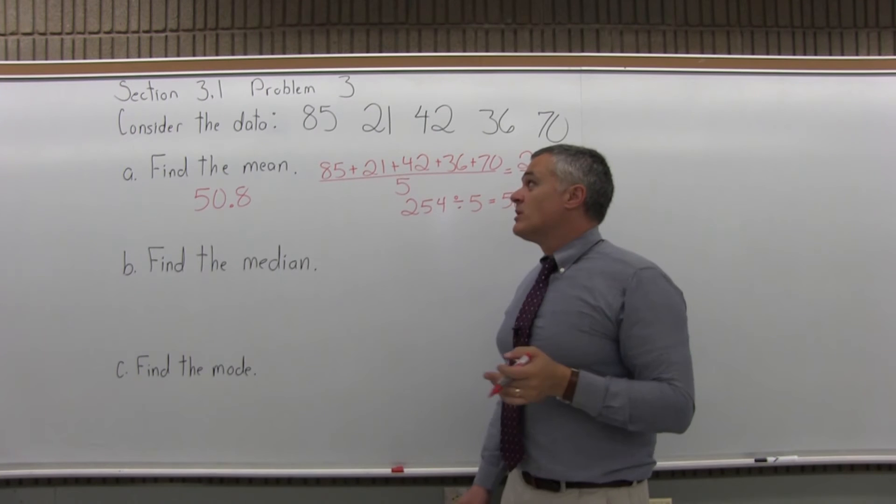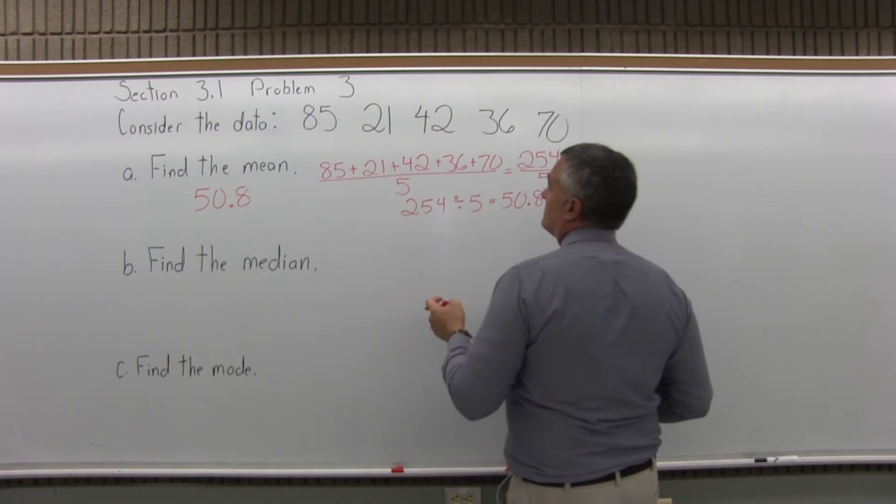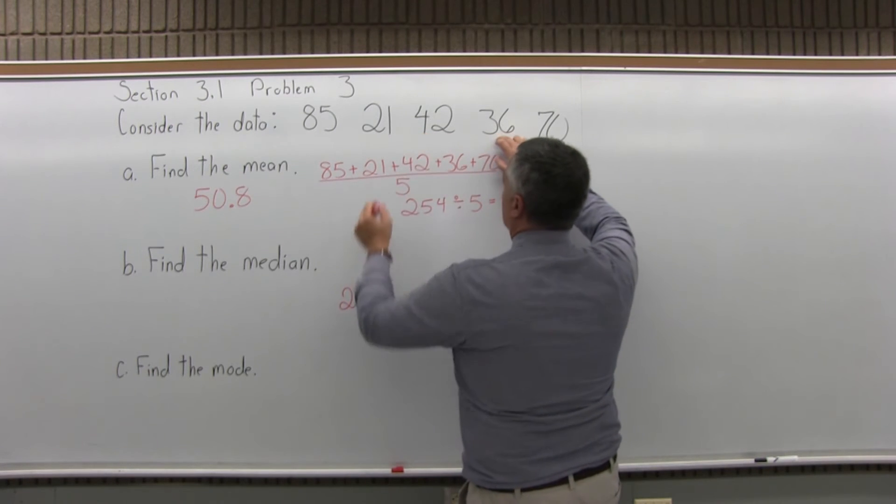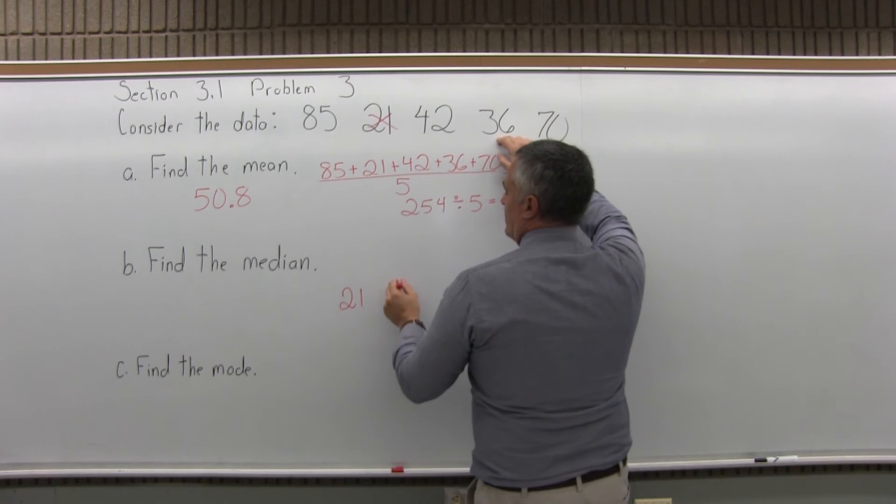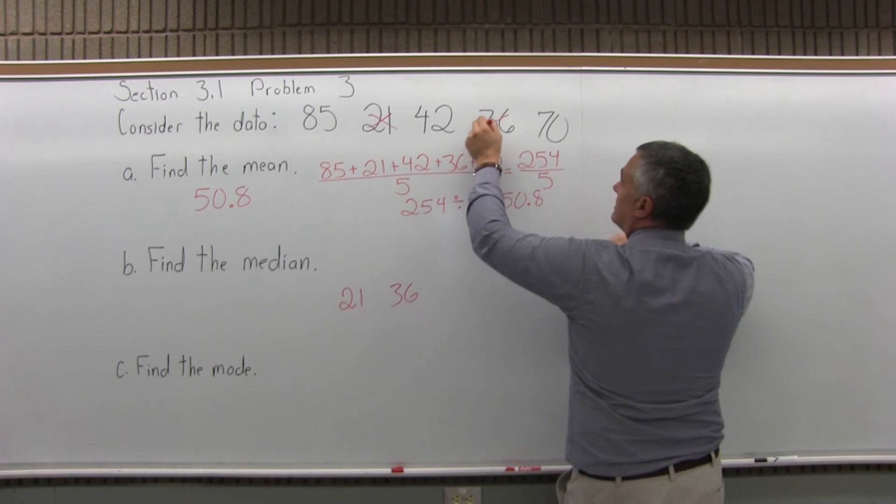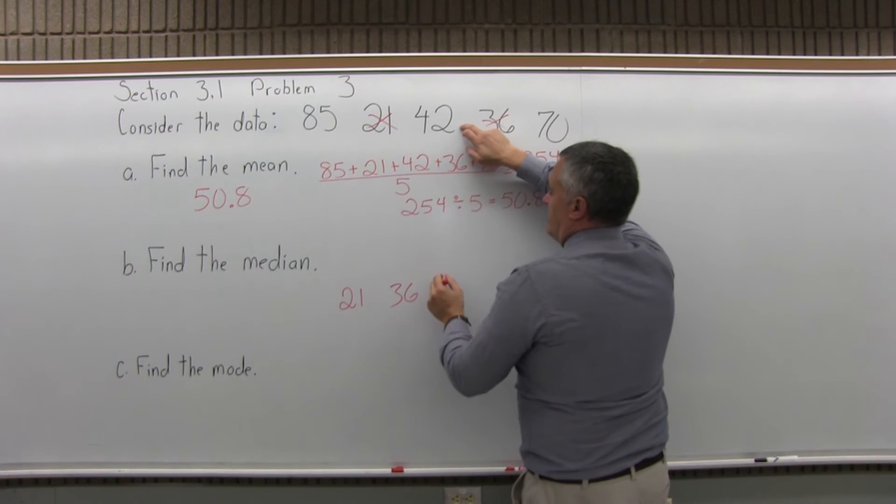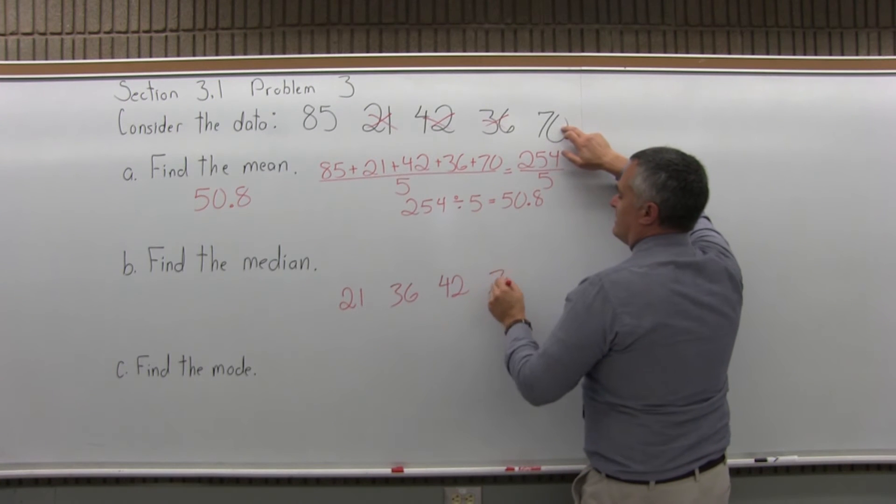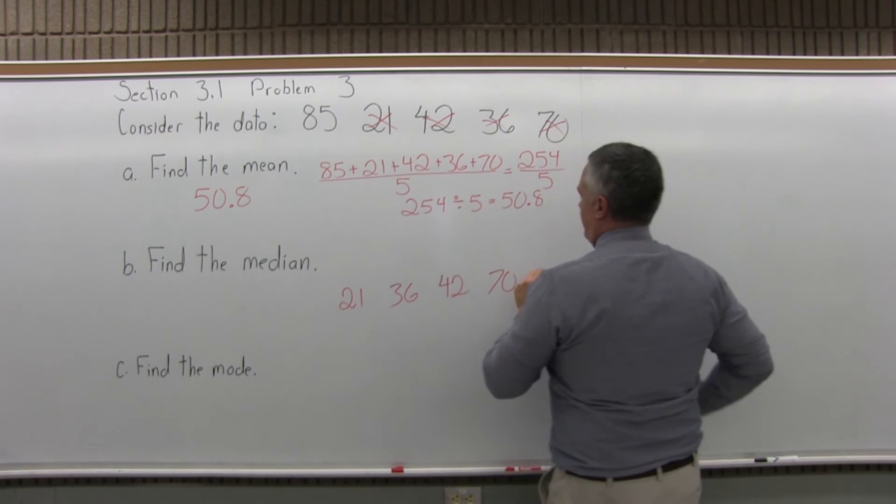Now for the median, we want to put the list in order and find the middle. So as I look, the smallest number is 21, then 36, then 42, then 70, and then 85.